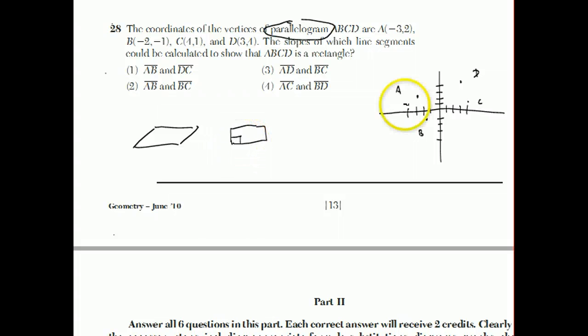So to check if this thing is really a rectangle, we'd have to check, AB and DC. We don't have to check those. We know those are the same slope. AB and BC, though, this is the answer. Because if we check those slopes and they're negative reciprocals of each other, then they'll be perpendicular. And that, together with the fact that it's already a parallelogram, would make it a rectangle.